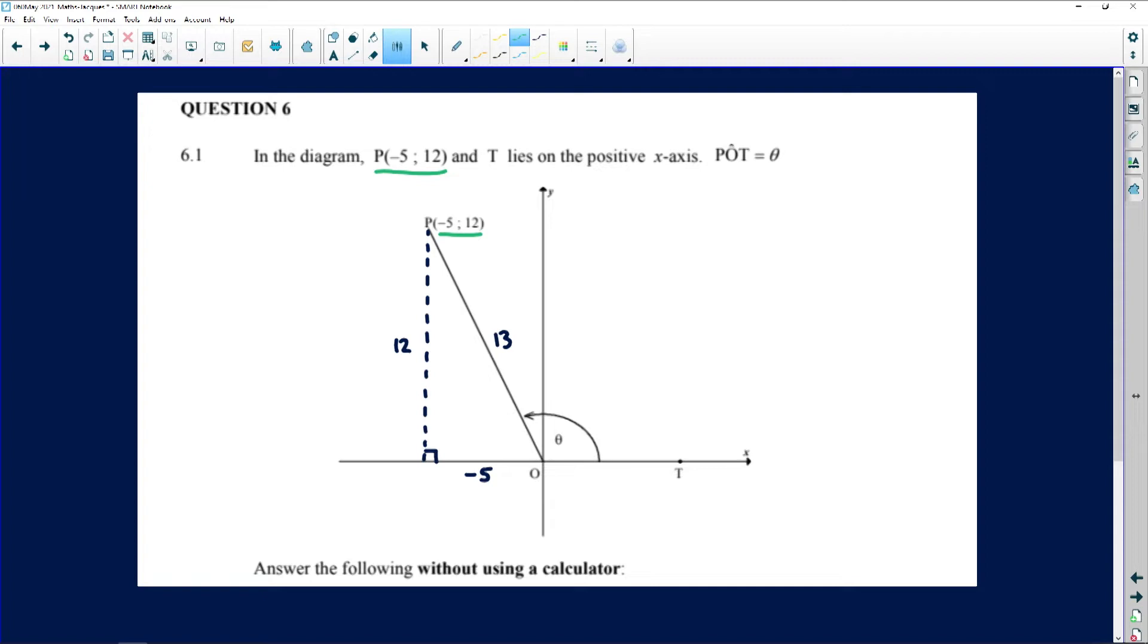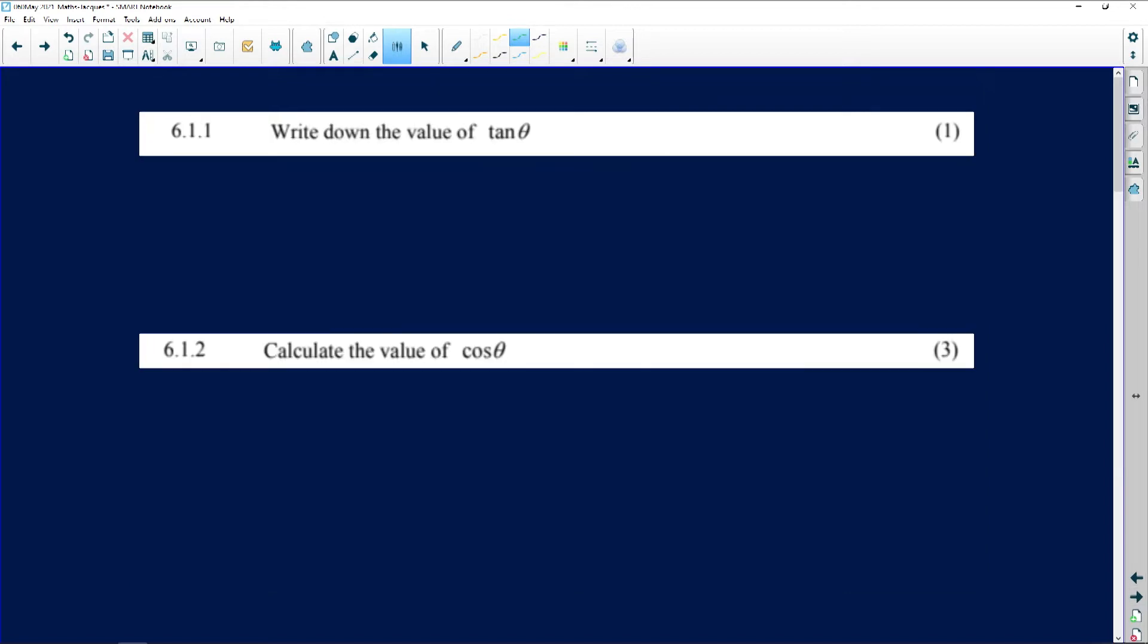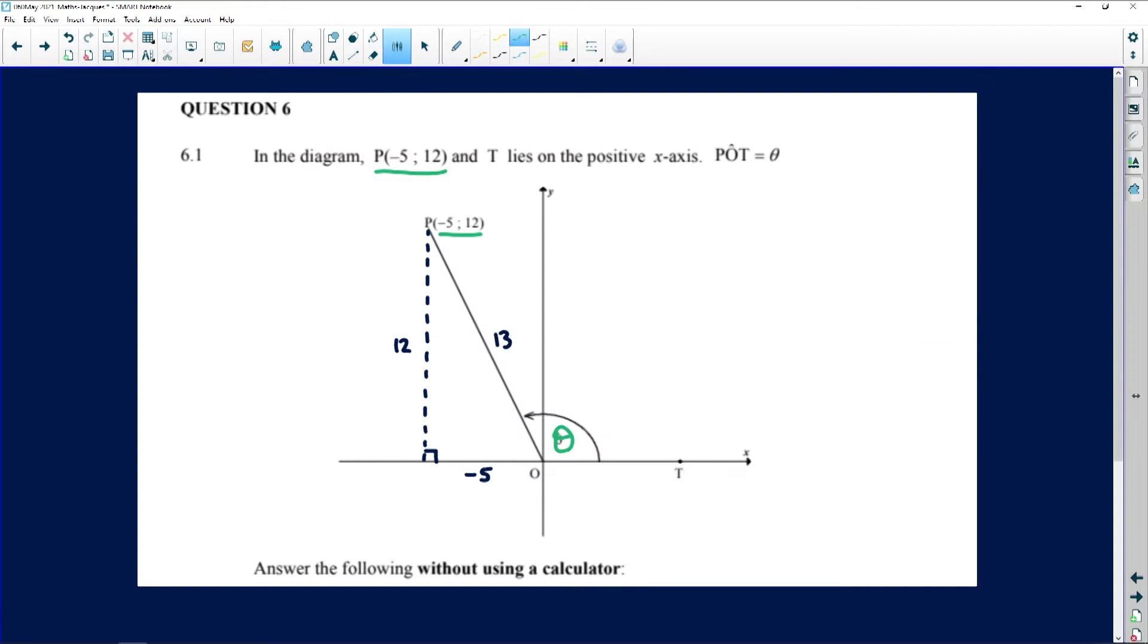Then they tell us the angle POT over here, this is the big angle theta. Let's see what they want us to find. They want us to find the tan of theta there, and while we're at it, we want the cosine of theta in the second question. So the tan of theta is quite okay for now. If we look at where theta lies, it lies over here, so tan is opposite over adjacent, so it's 12 over negative 5. Let's just put it in there.